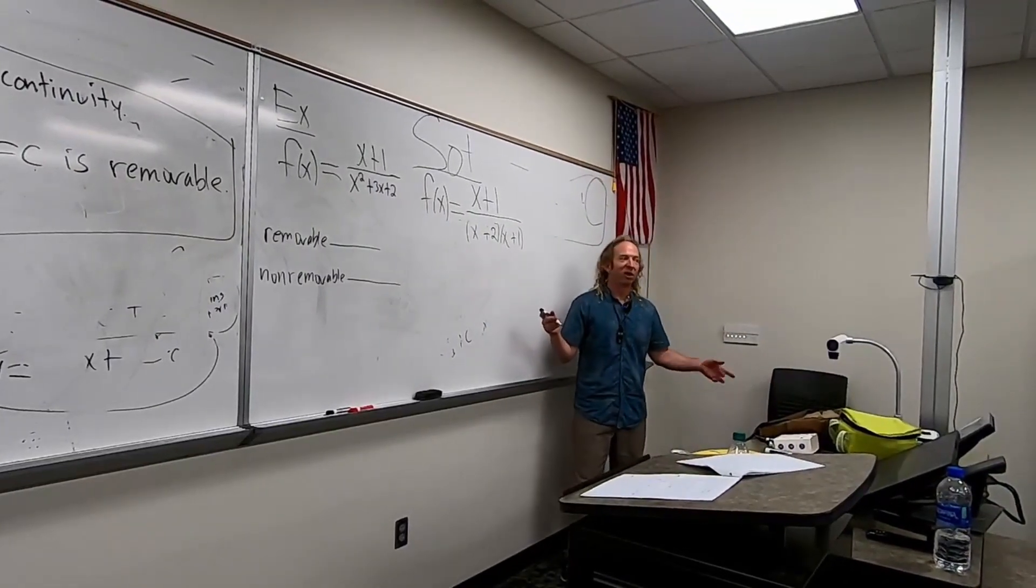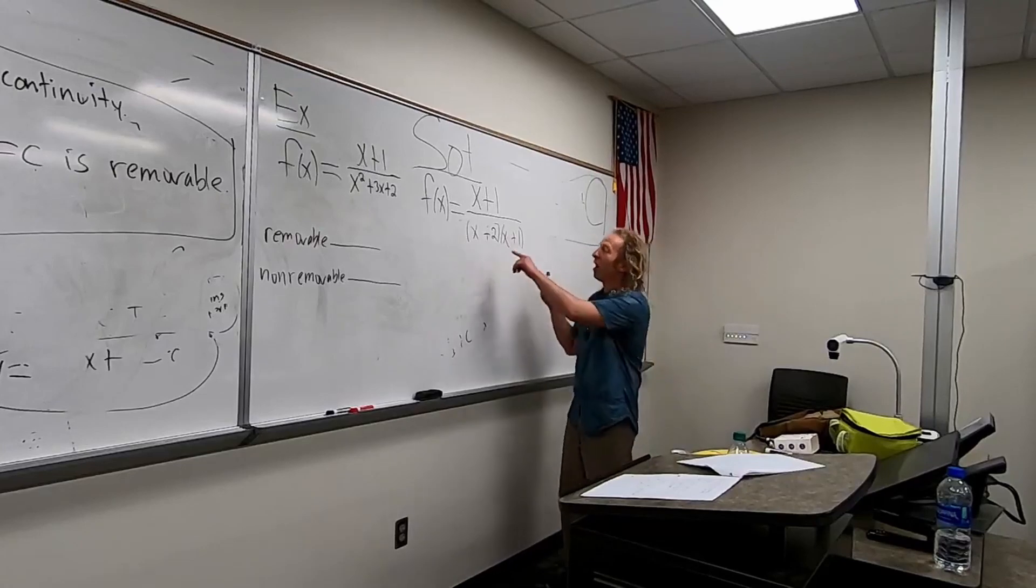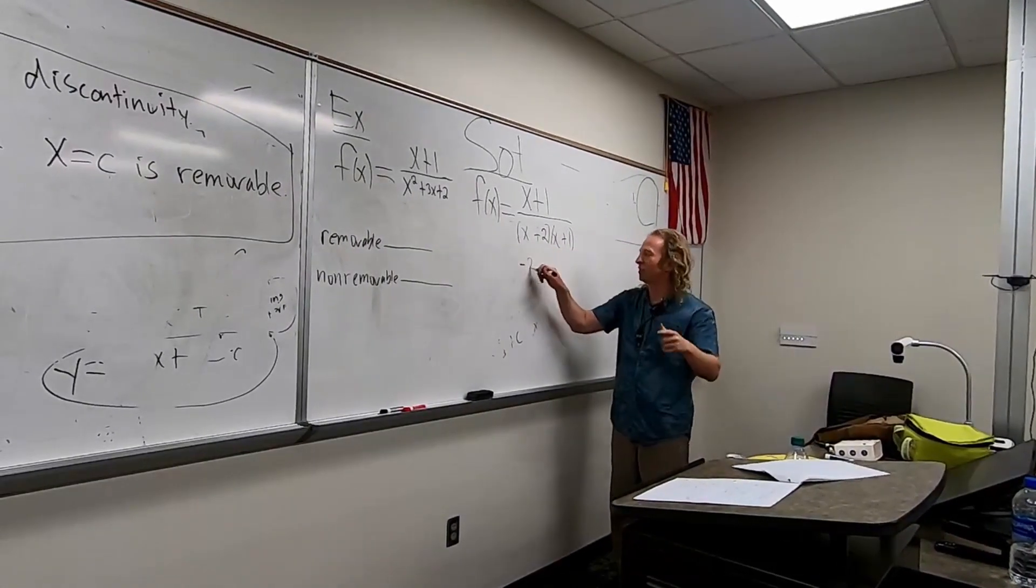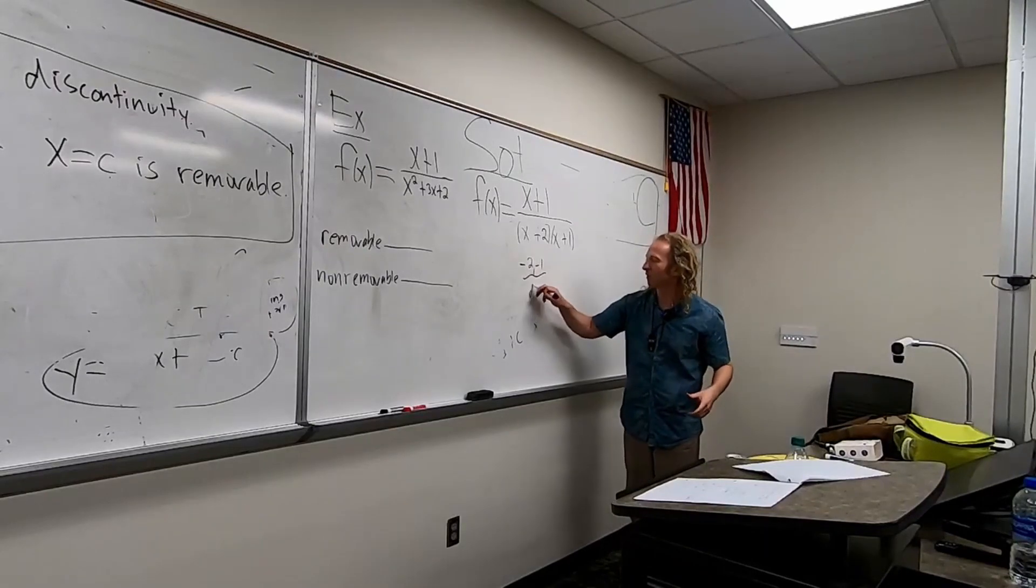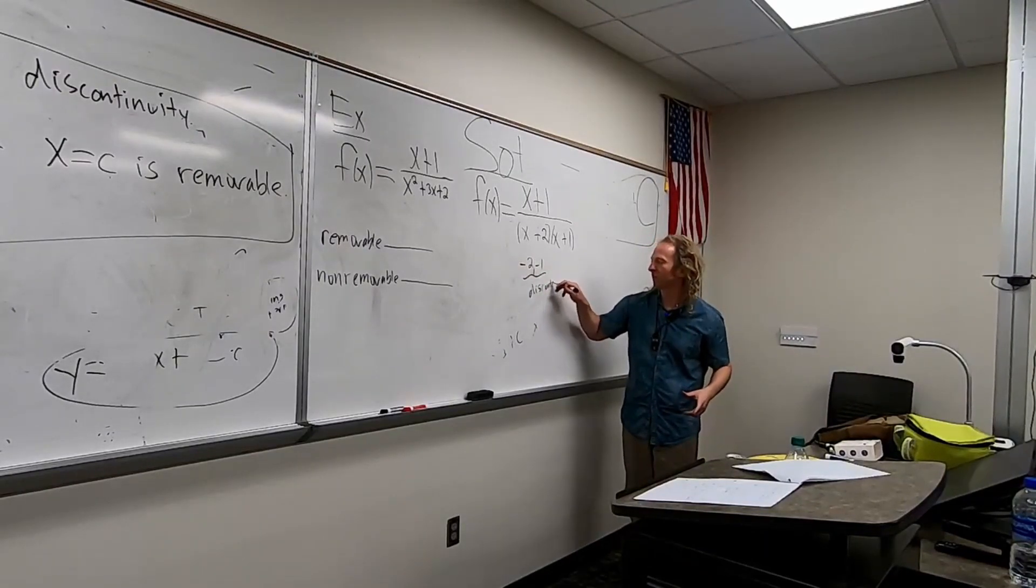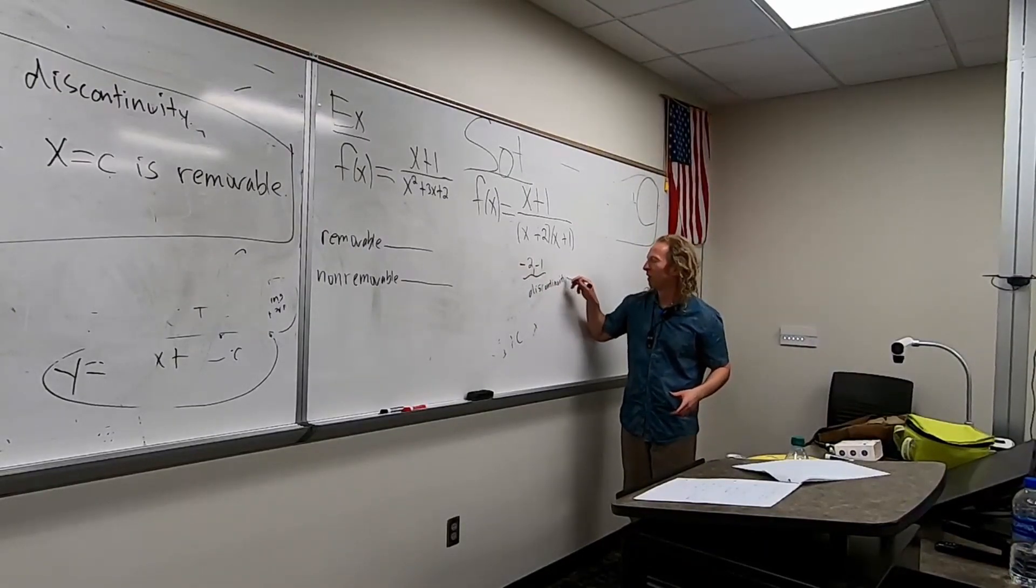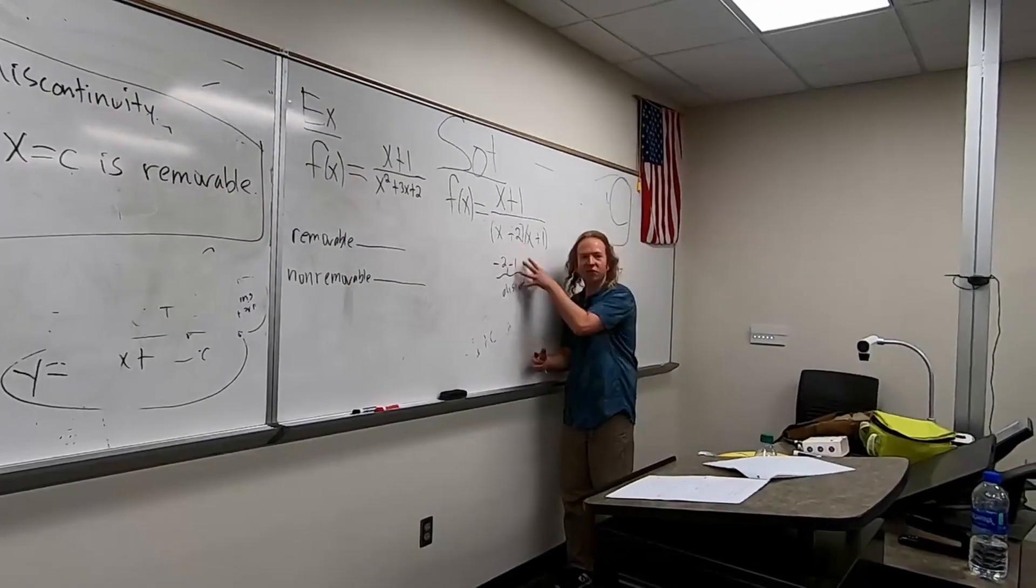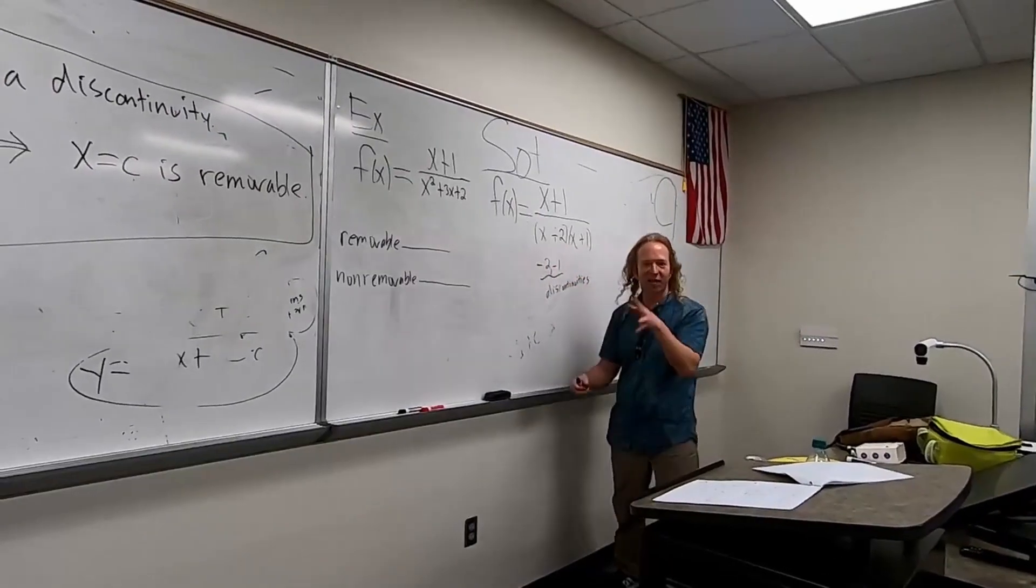What cancels now? x plus 1. x plus 1. By the way, obviously negative 2 and negative 1 are discontinuities, right? So these are discontinuities. I usually don't write this on the board, but why not? Let's be different. It's a new decade. So these are the discontinuities, right? Negative 2 and negative 1.